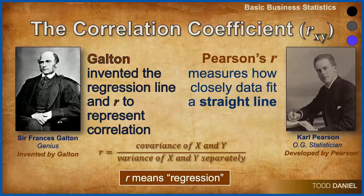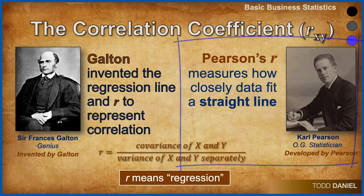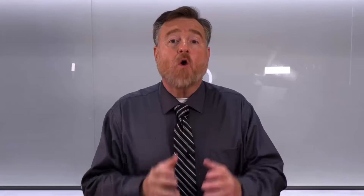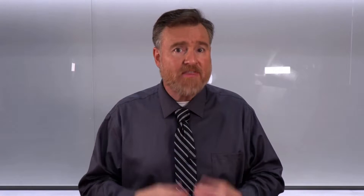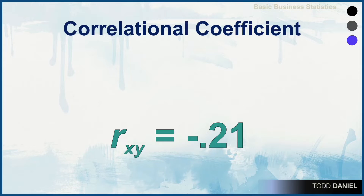Sir Francis Galton may have invented correlation, but it was perfected by Carl Pearson, who worked out the mathematics of using a correlational coefficient to show how closely the data fit to a straight line. So, what is a correlational coefficient? A correlational coefficient will mathematically depict the strength and direction of a relationship between variables.